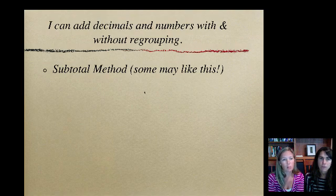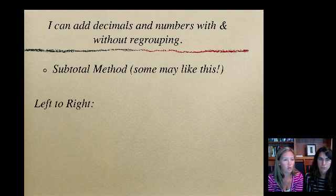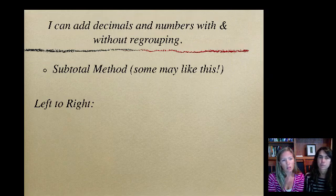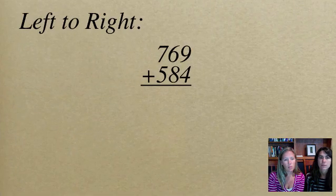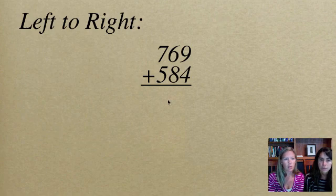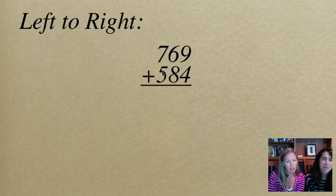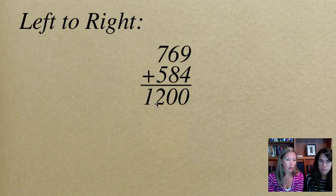So this is called the subtotal method. And I'll show you. There's two ways to do it. There's left to right, and then right to left. So again, we've got the same problem. This time, if we're starting with the left side. Now, I don't know about you guys, but I never add starting on the left. So this is a little weird. But I'm going to look at my hundreds column, because they're all lined up. So 7 plus 5 I know is 12. So I have 12 hundreds. So I have 12 with my two zeros, to show that it's 12 hundreds.